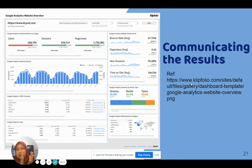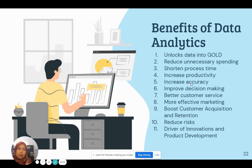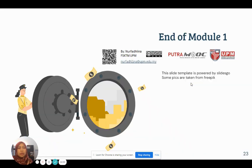Google Analytics is another example showing different types of graphs that can be used. The benefits of data analytics are many: unlocking data into gold, reducing unnecessary spending, and most importantly supporting decision making. This is the end of Module 1 — see you next time in Module 2.